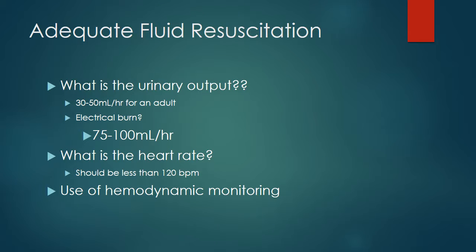If we are going to fluid resuscitate a patient, we need to know what to assess afterward to see if our intervention is working. The way we assess adequate fluid resuscitation in the burn patient is we are looking at things in a little greater volume than in a regular patient. Because of massive fluid shifts into the interstitial spaces and outside of the body due to loss of skin integrity, we are looking for a higher urine output — 30 to 50 mLs an hour for an adult patient.